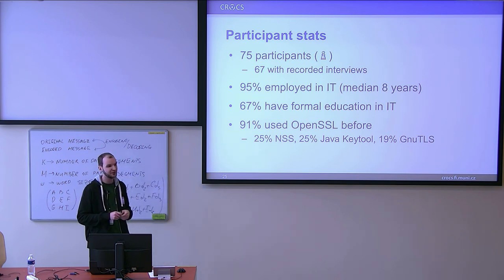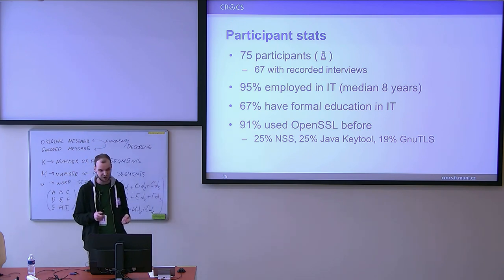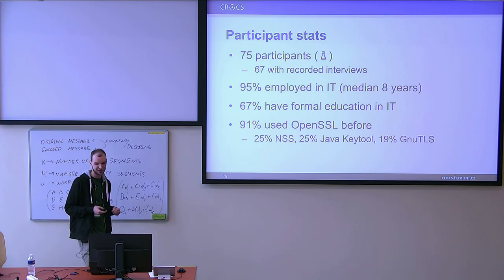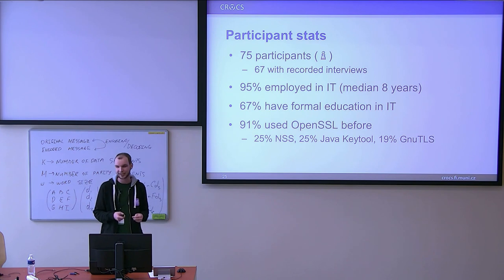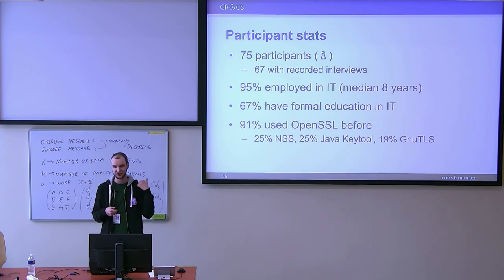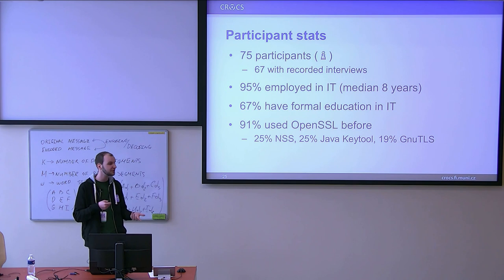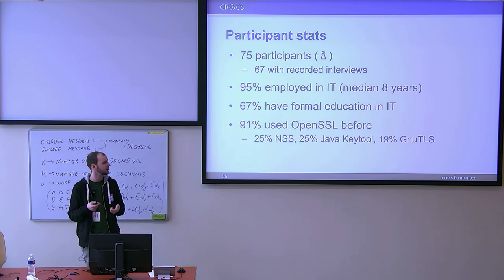Some of the things I'll present only come from the 67-participant sample, not the full sample. The vast majority were employed in IT, usually more than a couple of years — the median was eight. Only two thirds had formal education in IT, meaning a university degree — bachelor's, master's, or postgraduate. Most of them had used OpenSSL as a tool before, which I specifically mention because the error messages we used were copy-pasted from the current Fedora OpenSSL version, which was 1.1.0. We also used other tools — network security services, Java tools, GNU TLS, and others.